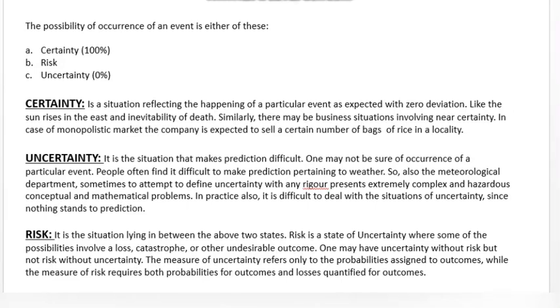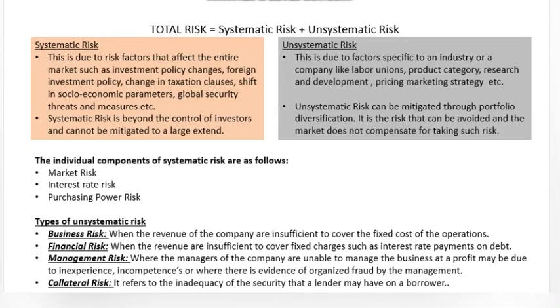Risk is a state of uncertainty where some of the possibilities involve loss or an undesirable outcome. How is total risk made up? Total risk equals systematic risk plus unsystematic risk.